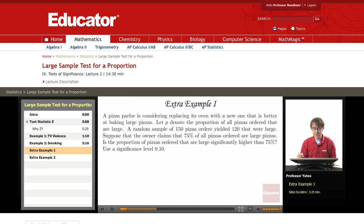Let's say we have a pizza parlor considering replacing its oven with a new one that is better at baking large pizzas. P is going to denote the proportion of all pizzas ordered that are large at this pizzeria. We're taking a random sample of 150 pizza orders and out of those 120 were large. The owner claims that 75% of all pizzas ordered are large pizzas.